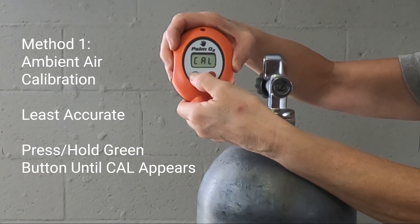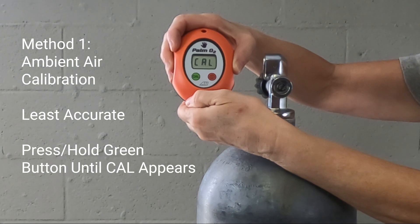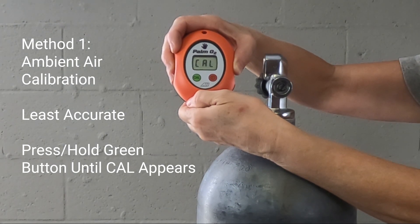To start a calibration, press and hold the green button until CAL appears on the display.